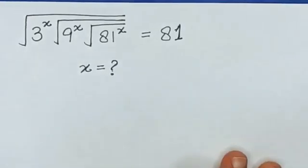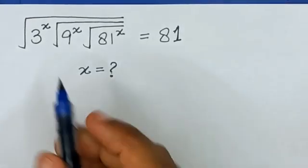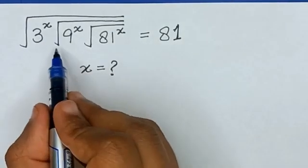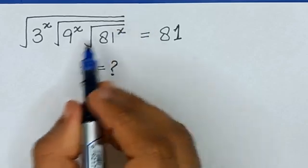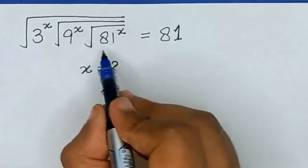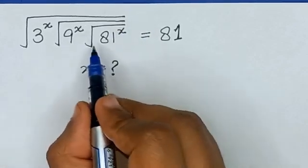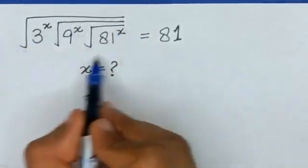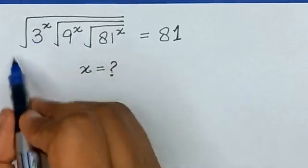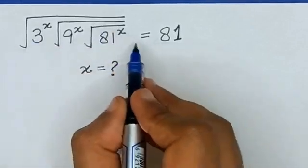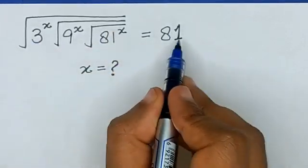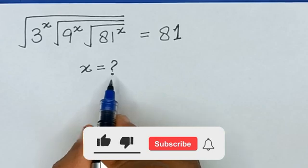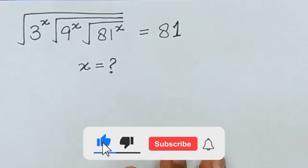Hello friends. Here we have a question: 3 raised to the power x, times square root of 9^x, under the square root of 81 raised to the power x, and this whole term under the square root is equal to 81. We have to find the value of x from here.